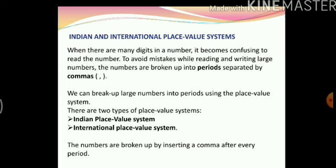There are two types of place value systems: the Indian place value system and the international place value system. The numbers are broken up by inserting a comma after every period. If you memorize the place value system and the place values that come under each period, you will know where to place the commas. Let us have a look at these place value systems.